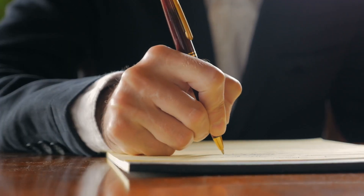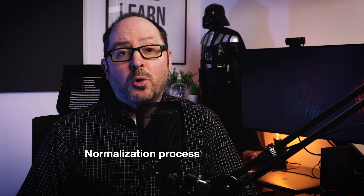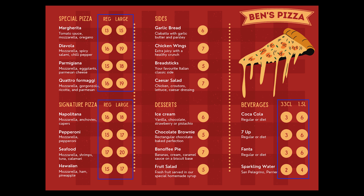The way we're going to approach designing our database and the tables in it is to spec out all of the fields for the data we want to collect. Then we'll go about the process of normalizing the data, adding more related tables, and defining the table relationships. Ben has given us a list of the different data he'd like to collect for each order: item name, item price, quantity, customer name, and delivery address. This list is only the starting point. We know we'll need to include an order ID field, split out the delivery address into different parts, and include separate fields for item size and product category — pizza, sides, desserts, and beverages.